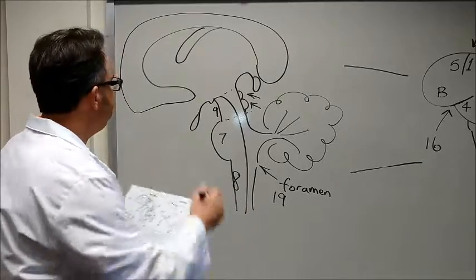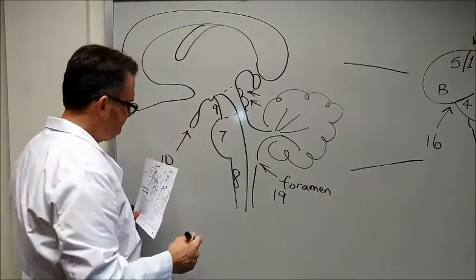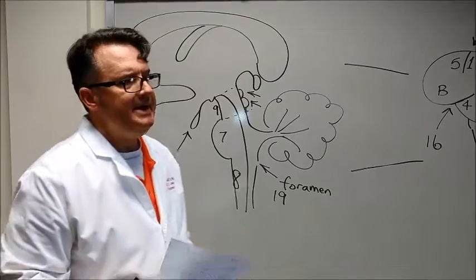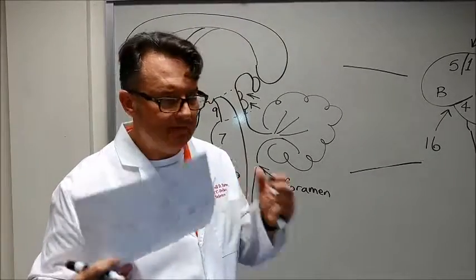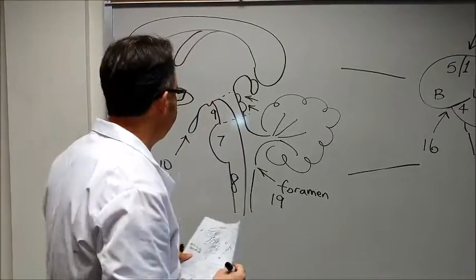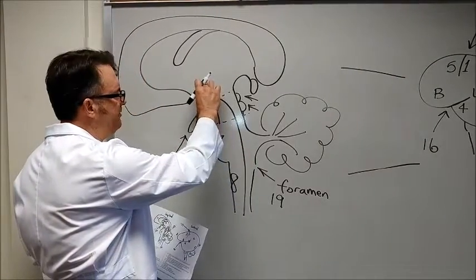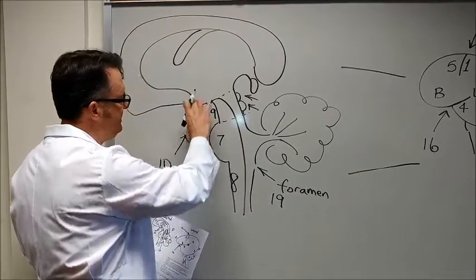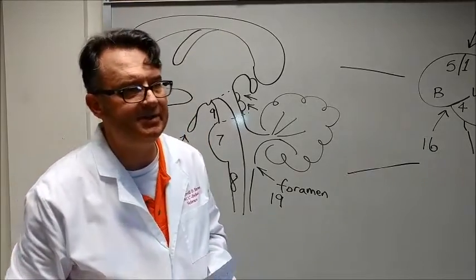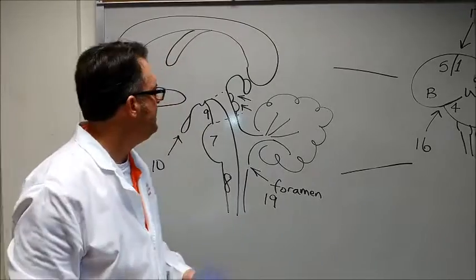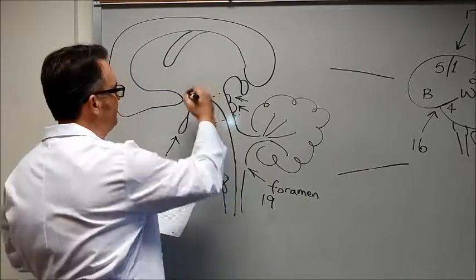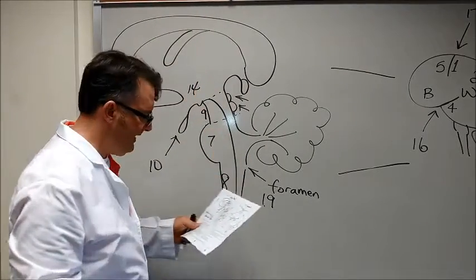Number ten is the pituitary. The pituitary gland is the hormonal gland that controls most of the functions in the body. It does have a connection to the brain in the posterior aspect and then the frontal aspect has a connection through what's called the hypophyseal portal system. It's a capillary network and it connects to number 14 which is the hypothalamus.